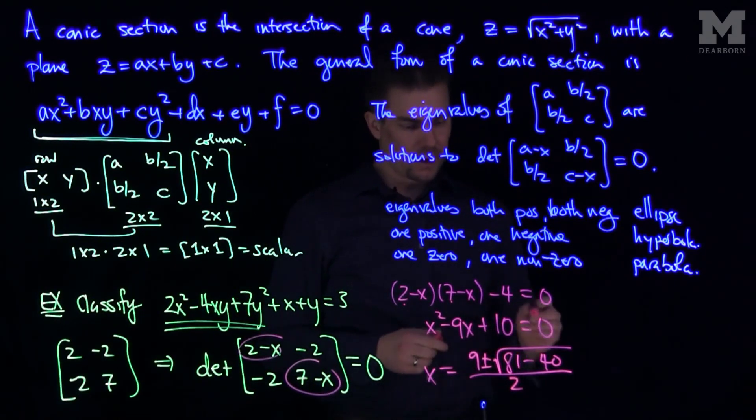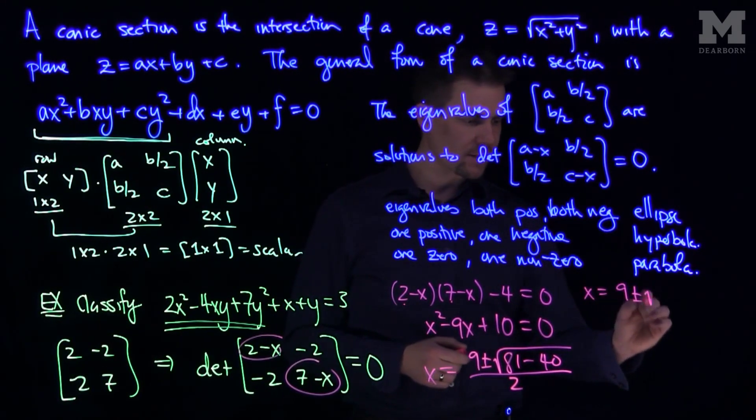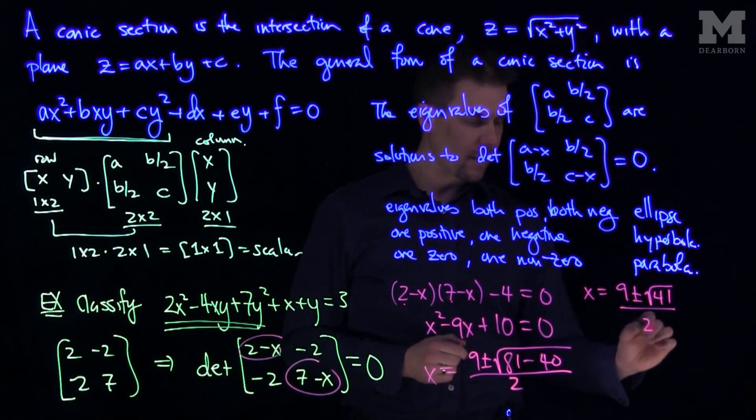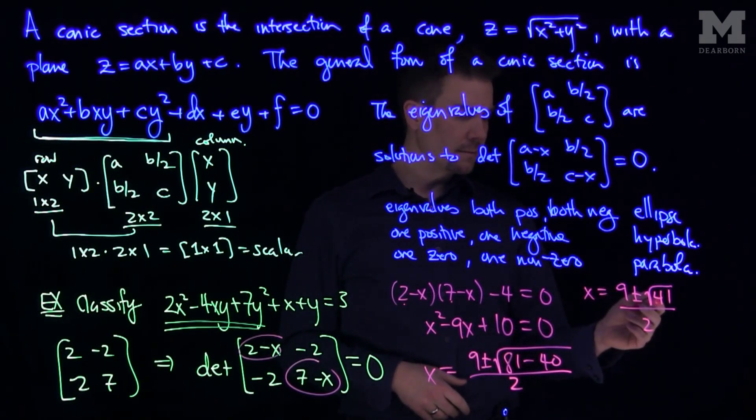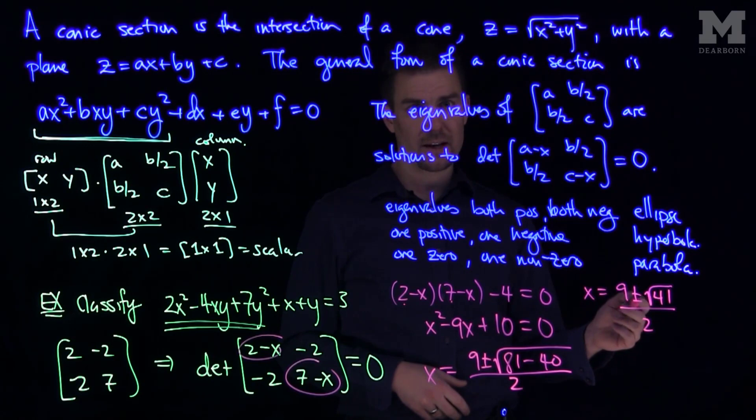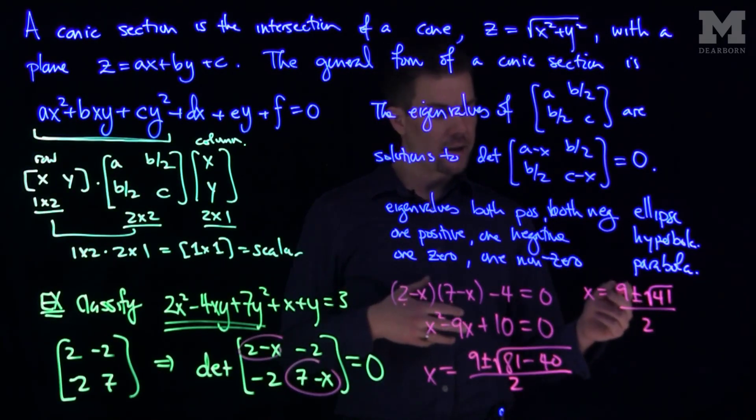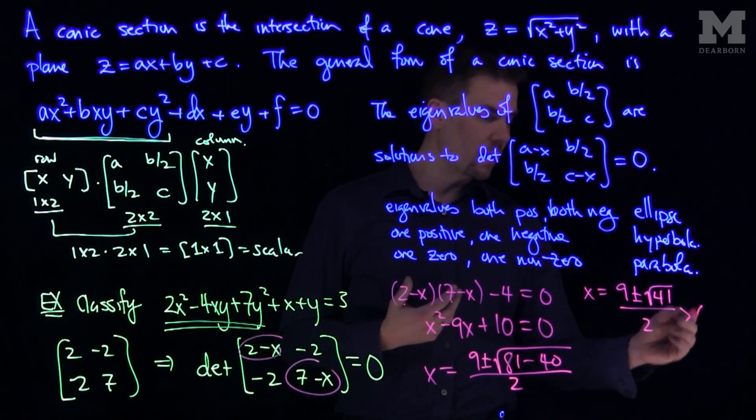And now what we see over here is this is going to be 9, so x is going to be 9 plus or minus the square root of 41, all divided by 2. And so from this, we see that the square root of 41 is between 6 and 7. So we'll have 9 plus or minus 6 or plus or minus 7, that's going to be positive. And then 9 minus 6 or 7 is also positive, so both these numbers over here are positive.